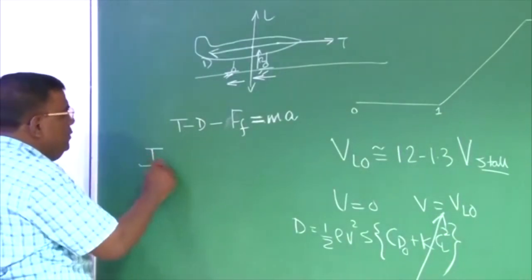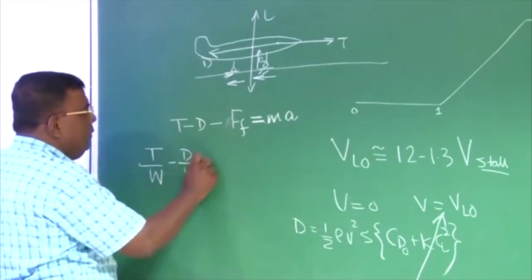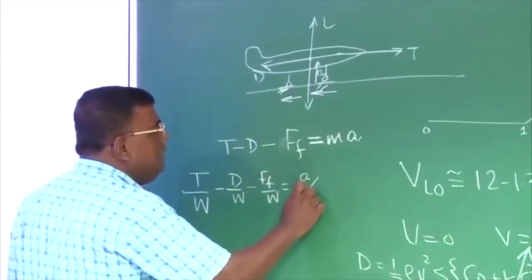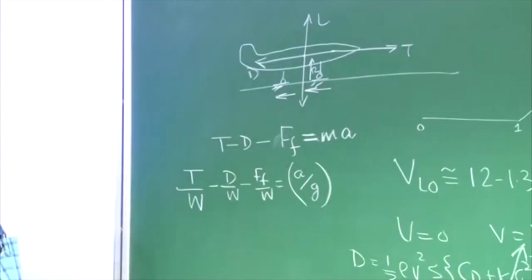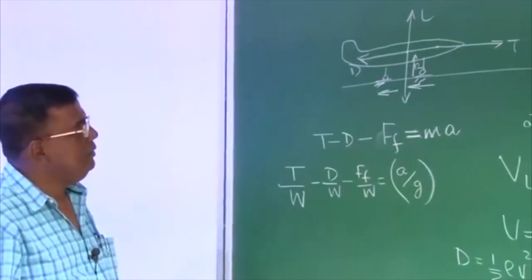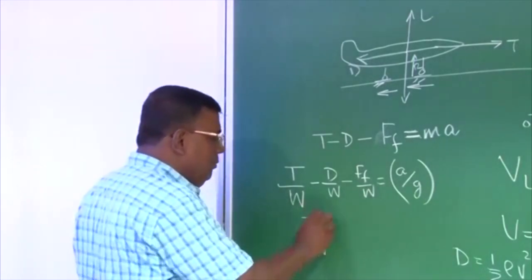And then, if I say t by w minus d by w minus ff by w equal to a by g, what is the minimum t by w required? If I want to get an assessment, I can easily find out t by w minimum.